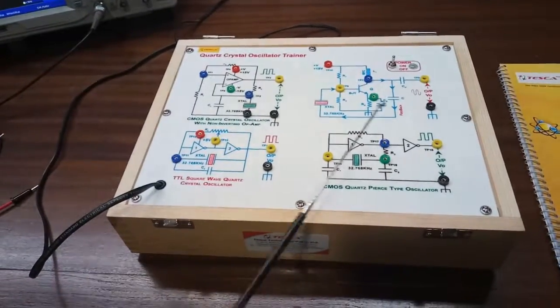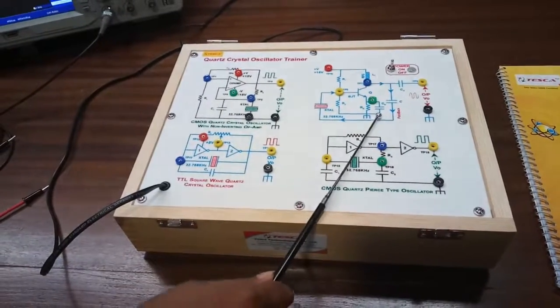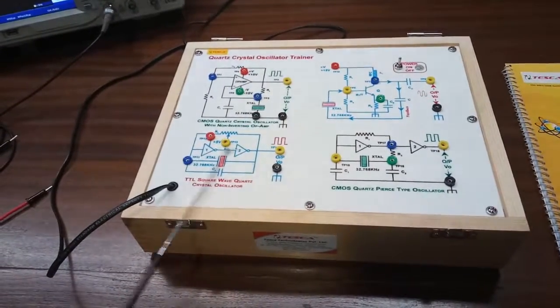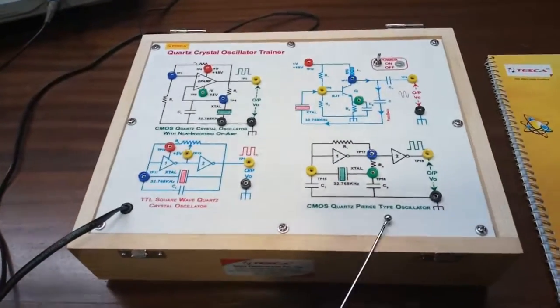These are the circuit diagrams. This is the CMOS crystal oscillator with non-inverting op amp. This is the transistor-based oscillator circuit. This is TTL square wave crystal oscillator circuit, and this is CMOS Pierce type oscillator circuit.